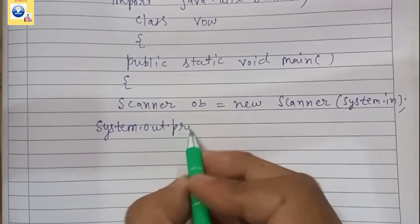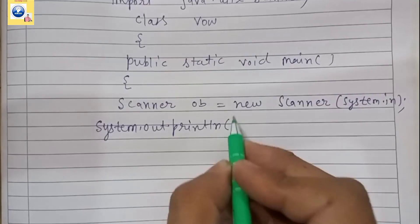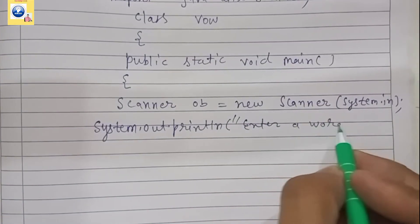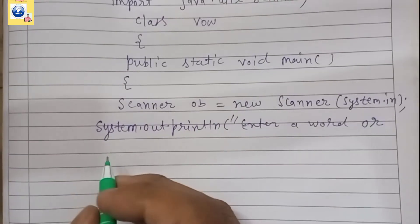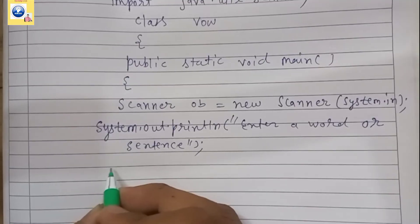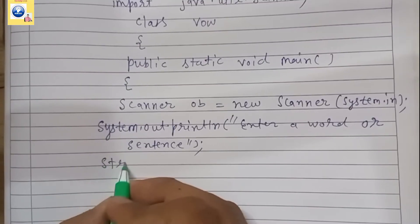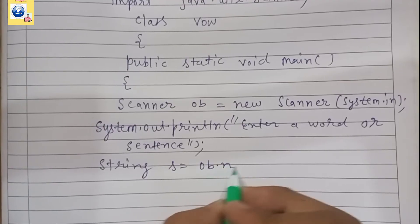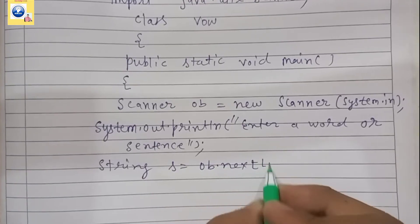The message will be System.out.println. Using this method we'll provide a message: enter a word or sentence. So we'll store it in a string variable. Here I'm declaring String s equals ob.nextLine.